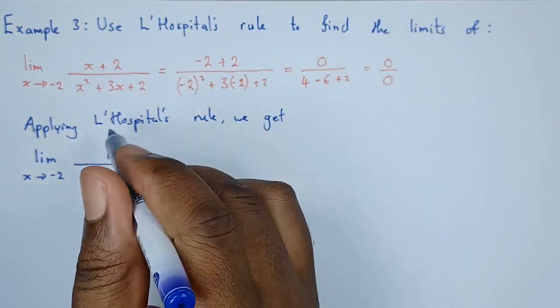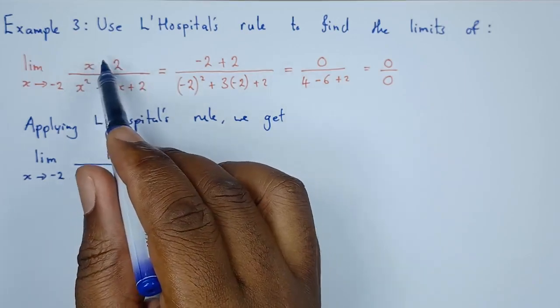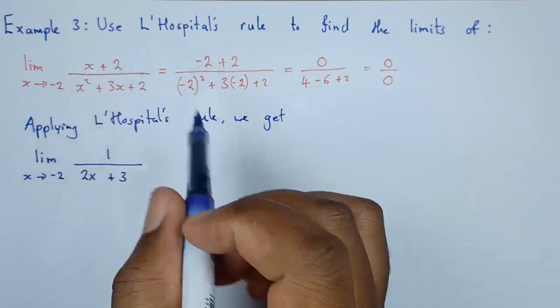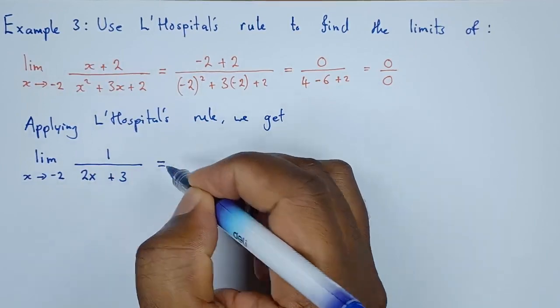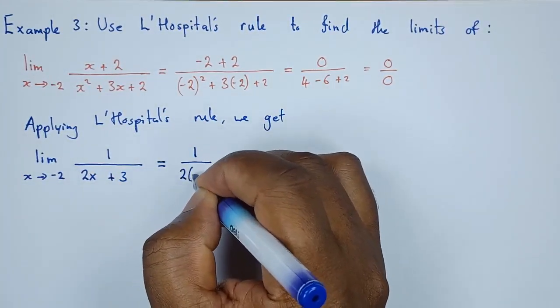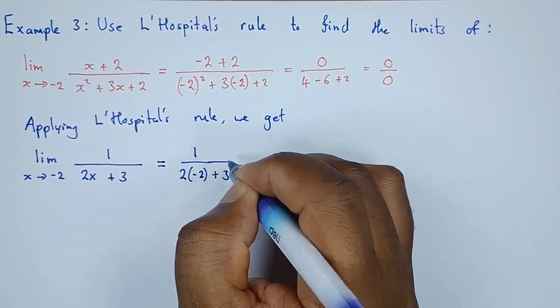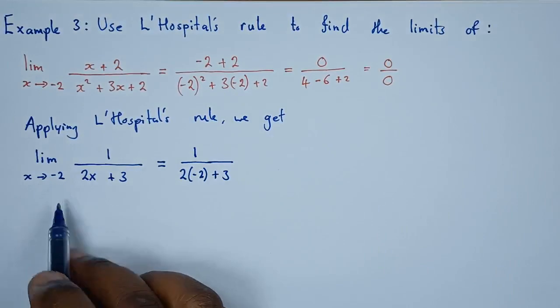So if this is what we have, applying L'Hôpital's rule simply means finding the derivative of both the numerator and the denominator. What does this give us? Let's apply the limit now. This will give us 1 divided by 2 multiplied by negative 2 plus 3. Remember we substitute x with negative 2.